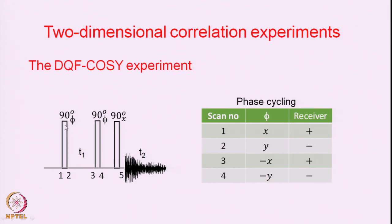The pulse sequence for the double quantum filtered COSY has a 90-degree pulse with phase phi. In COSY we had 90x-90x — it was a two-pulse experiment: 90, T1, 90, then data collected immediately after. Here we introduce a small time period of the order of a few microseconds to allow for changes in the phases. Following that, a final 90-degree pulse is applied and then the data is collected as a function of time T2.